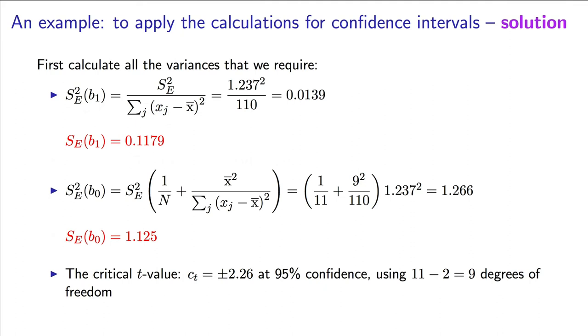The critical value of t is 2.26 at the 95% level, and there are 11 minus 2, or 9 degrees of freedom.